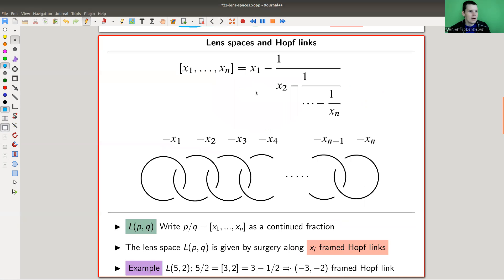For the lens space L(p,q), the definition in terms of surgery is the following: you write p over q as a continued fraction like this. The usual expression will be finite because p and q will just be a fraction, so this will be some finite collection of x's. You have the corresponding collection of Hopf links labeled with framing given by the x's. For example, five over two is the continued fraction 3 minus 1/2.